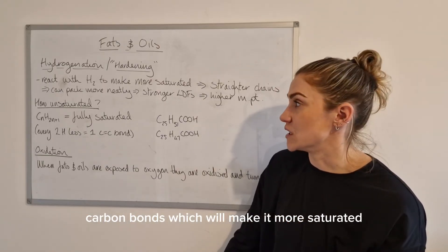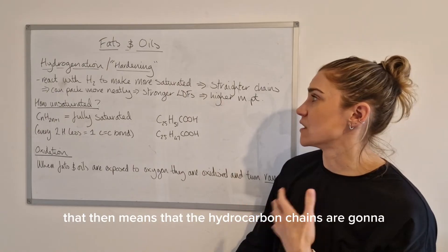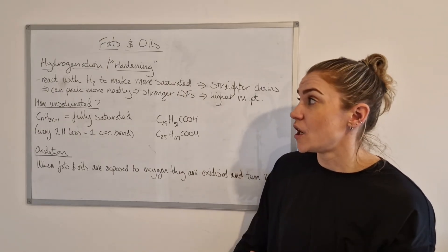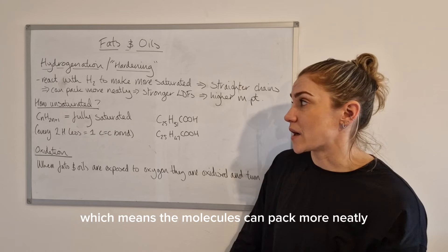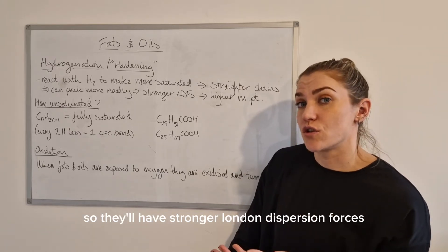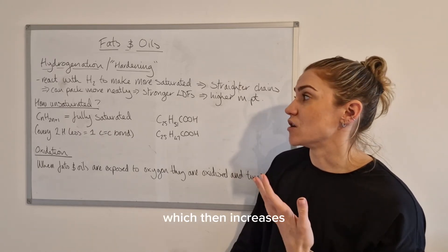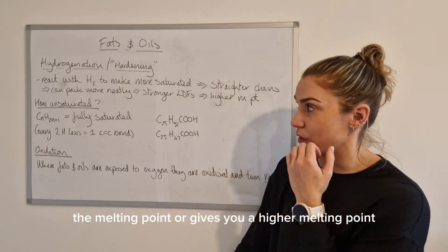When you react the fat or oil with hydrogen, you'll break some double carbon to carbon bonds which will make it more saturated. That means the hydrocarbon chains are going to end up being straighter, which means the molecules can pack more neatly, so they'll have stronger London dispersion forces which then increases the melting point.